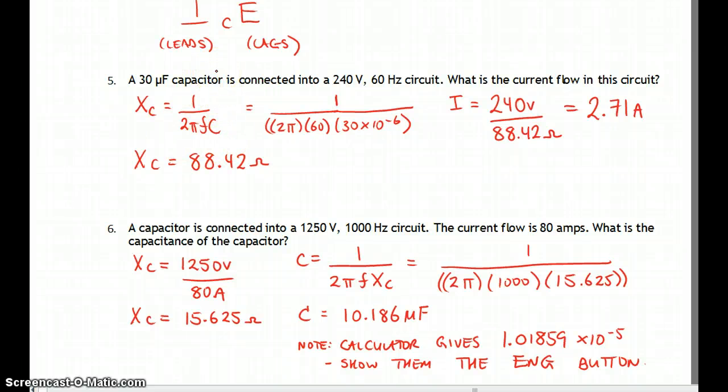So the reactance Xc is equal to 1 over 2 pi fc. So you put it into your calculator. Try and do it in one shot there. You put another double bracket on the side here, so it's 2 times pi times 60 times 30 microfarads.